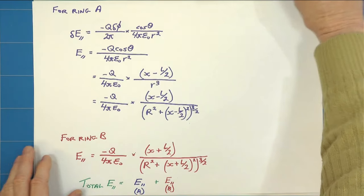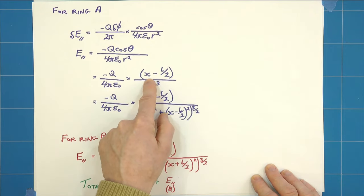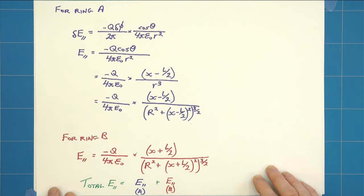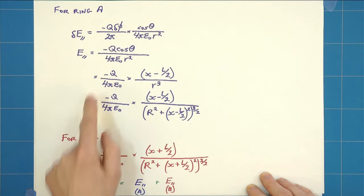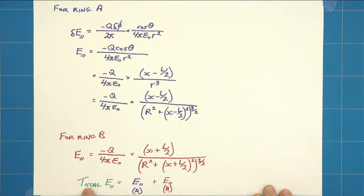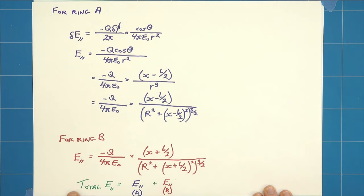For ring B we get exactly the same thing, except where I put x minus l over 2, it simply becomes x plus l over 2. So the form of that and the form of that are very similar. And then the total E at our point x is simply one plus the other, and again it's in the axis of the x direction.